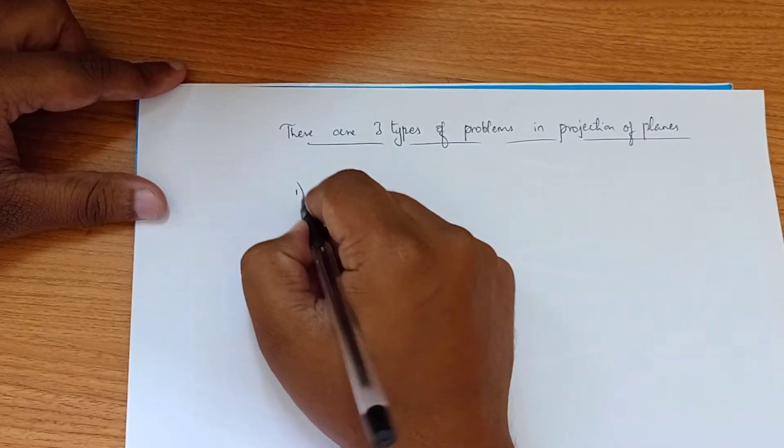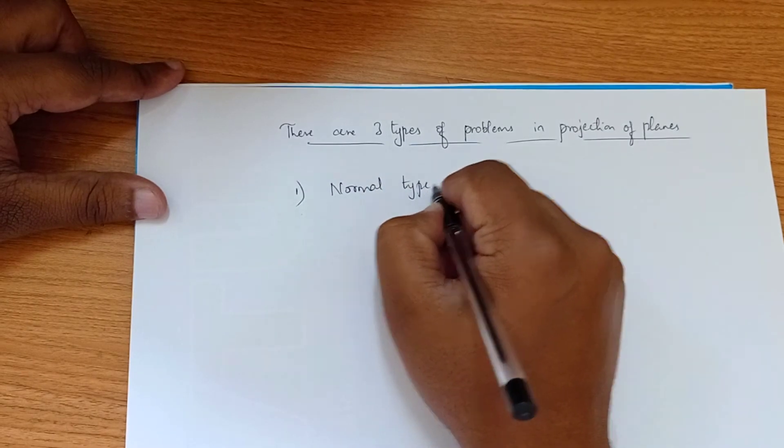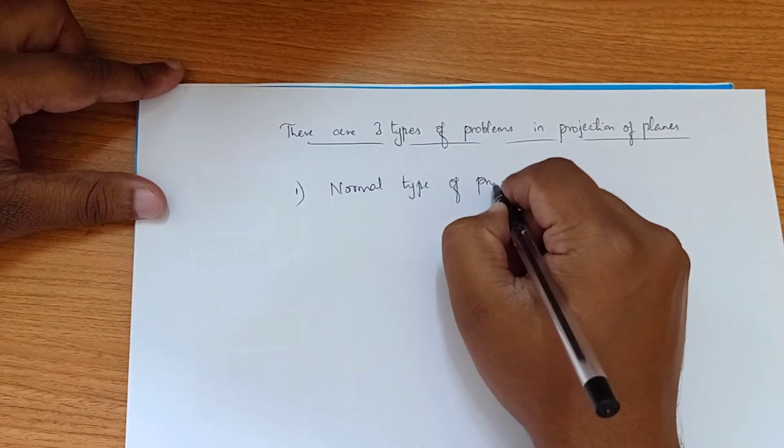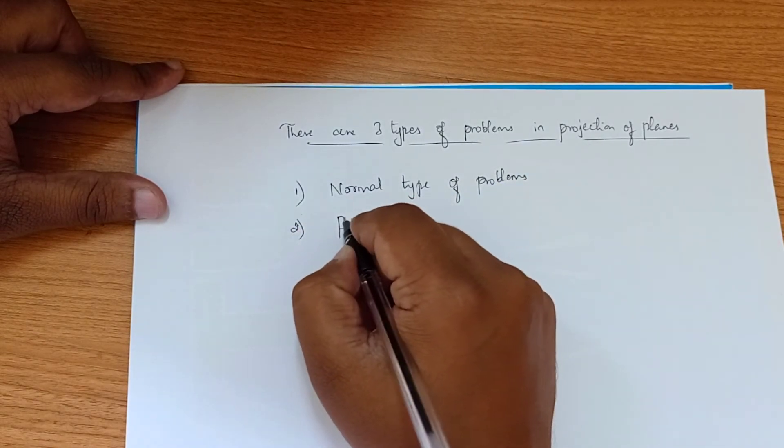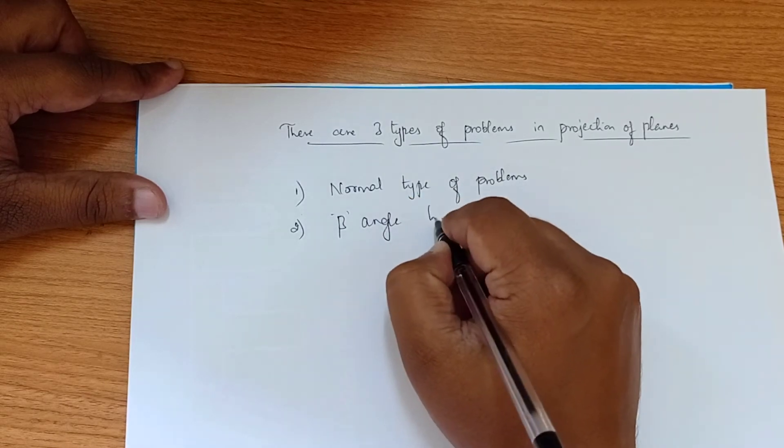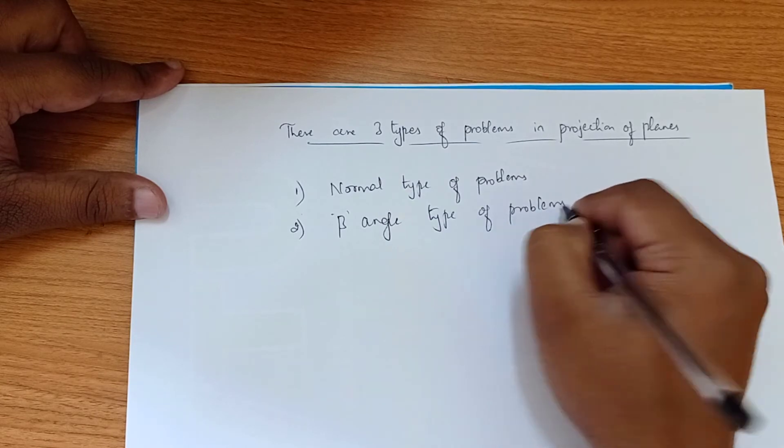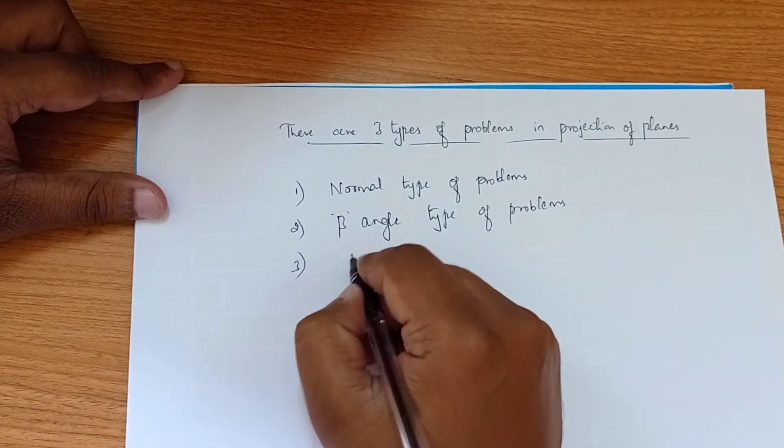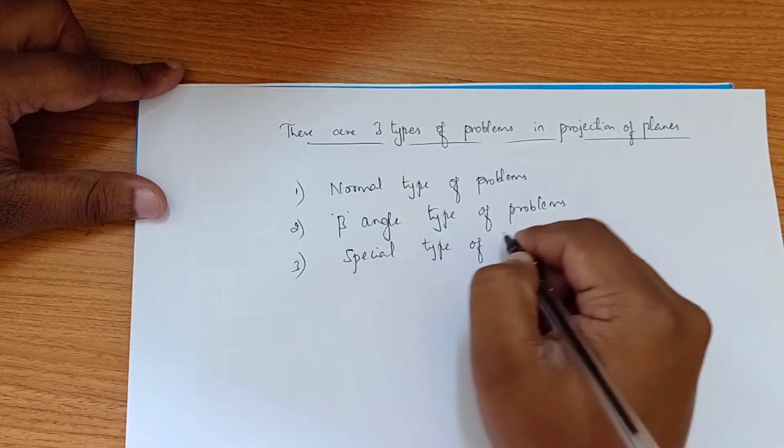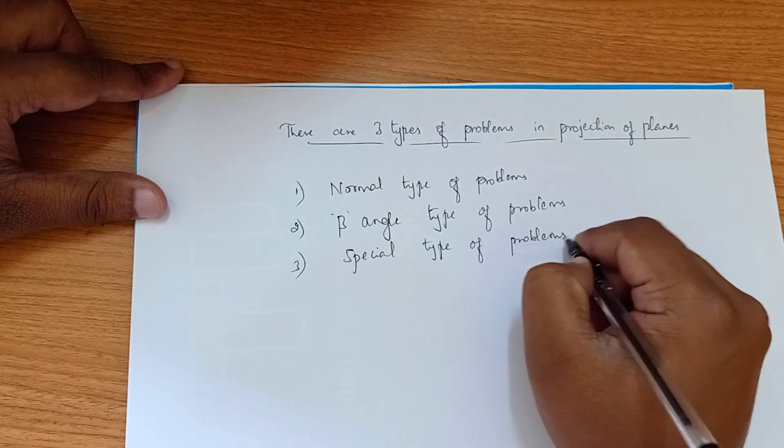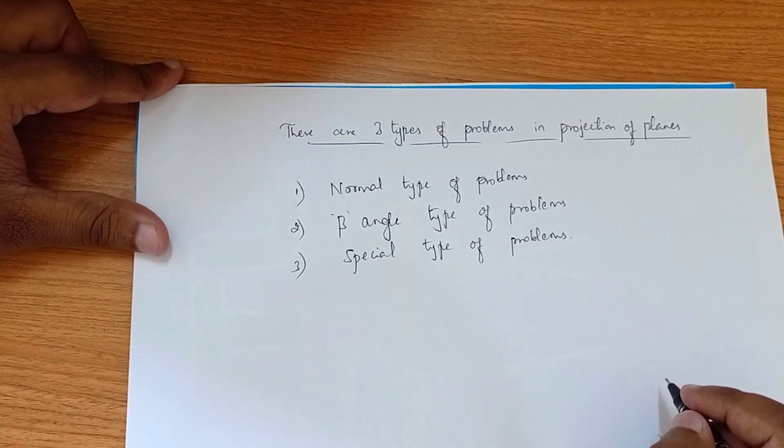The first type of problem is normal type of problems. Second one is beta angle type of problem. Third one is special type of problems. When we are solving the problems, we will be dealing with each of these types.